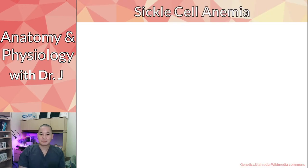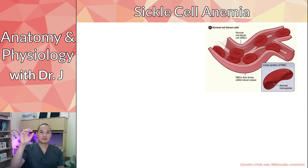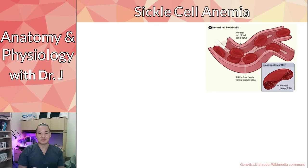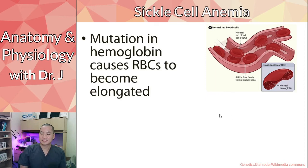This is what we call sickle cell anemia. Normal red blood cells are round with a double dimple - biconcave. They look like an inner tube that instead of having a complete hole has a little membrane in between. The interesting thing is that sickle cell anemia is caused by a single mutation.